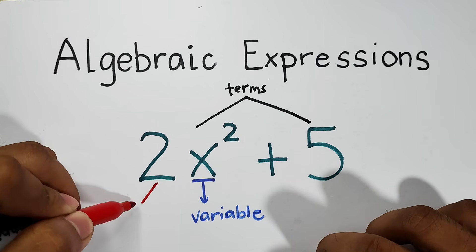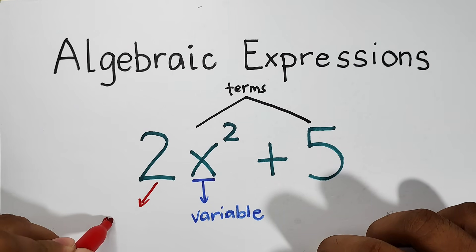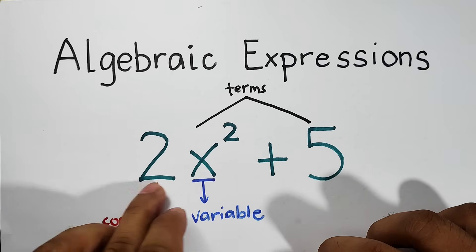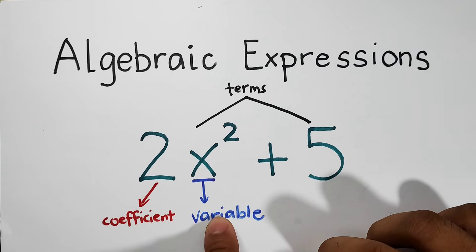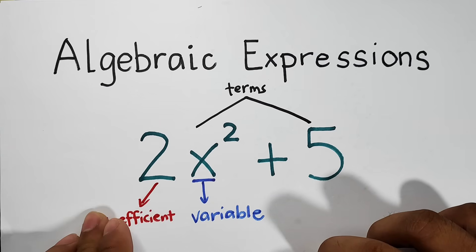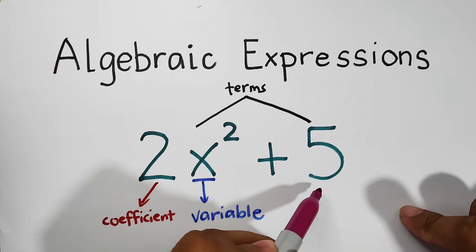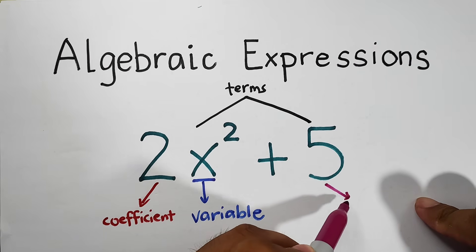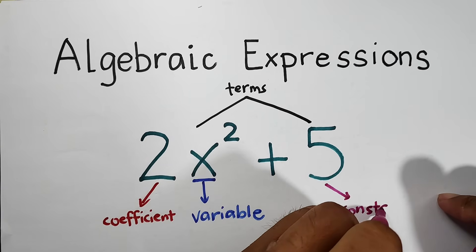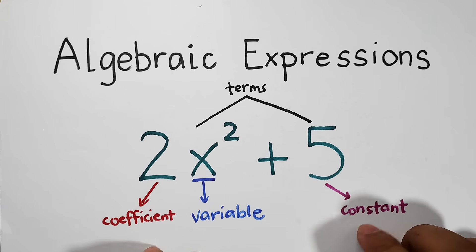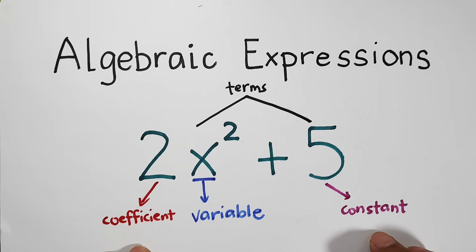Next, aside from the variable, we also have the coefficient. The coefficient is the number beside any given variable. Here in this given term 2x squared, your variable is x. The coefficient is the number on the left side of any variable. What's next? After that, we also have the number 5, which is your constant. A constant is a part of an algebraic expression with a fixed value.